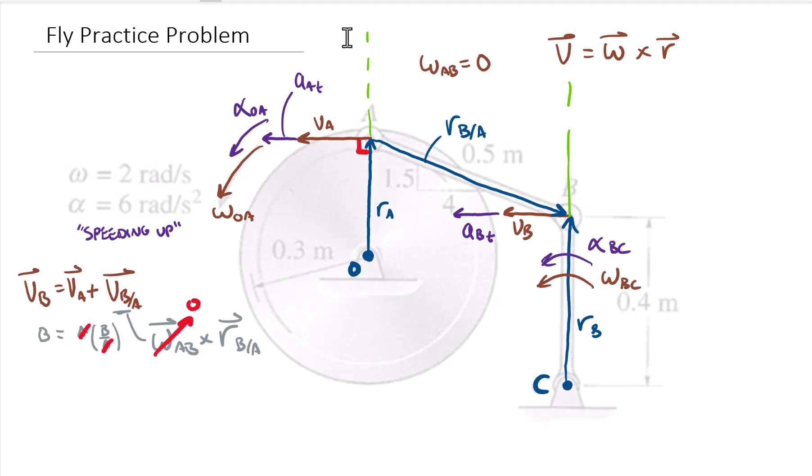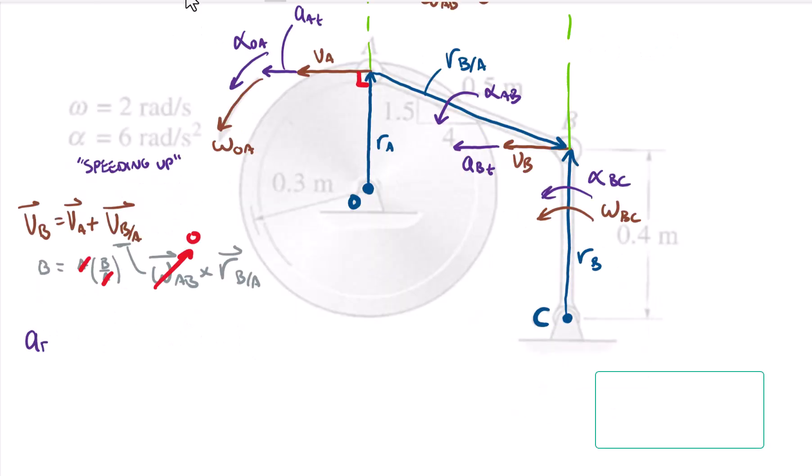But just because the omega is equal to zero doesn't mean acceleration is also equal to zero. So I'm going to be forced to pick an assumed direction of alpha. I'm going to assume alpha of AB is positive there from the right-hand rule. So going off that assumption, let's additionally draw my relative acceleration. We're looking at the acceleration of B. I'm going to write the tangent and normal terms. Acceleration of B tangent plus acceleration of B normal is equal to acceleration of A tangent plus acceleration of A normal plus the relative terms: acceleration of B relative to A tangent and acceleration of B relative to A normal. So there's all four different terms.